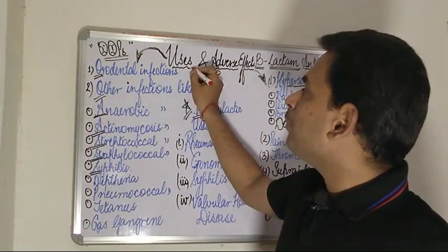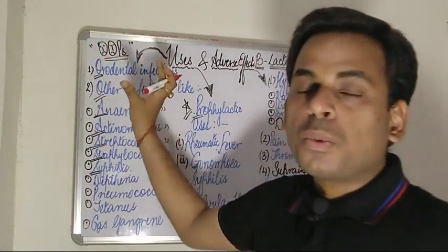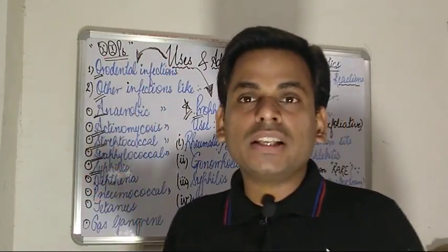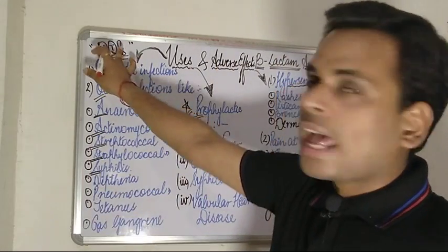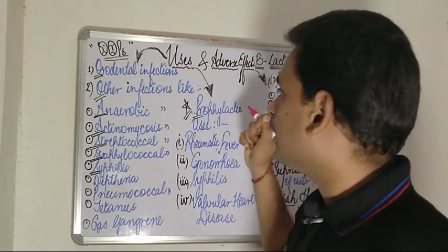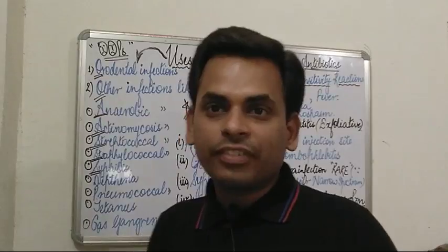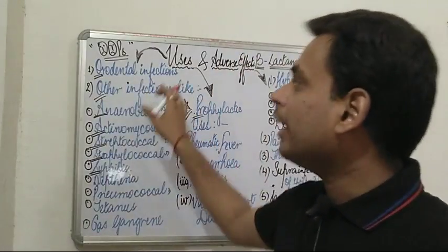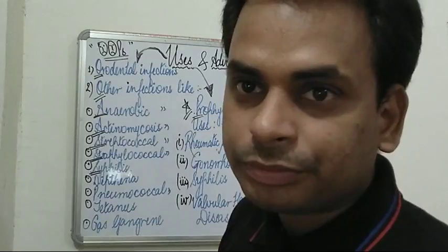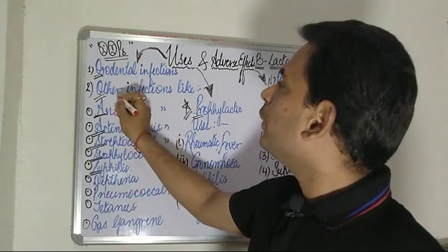The uses can be better remembered using the mnemonic 'OOPS.' Whenever there is a bacterial infection leading to an 'OOPS'-like condition, this mnemonic can be used to remember the different uses of beta-lactam antibiotics. The first 'O' of OOPS refers to orodental infections.